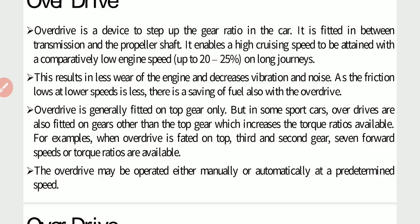At lower speeds, fuel consumption is less, so there is also a saving of fuel with overdrive. Overdrive is generally fitted on top gear only, but in some sports cars, overdrives are also fitted on gears other than the top gear, which increases the torque ratio available. So if we require speed above the engine RPM, like in a sports car, overdrive gears are fitted.